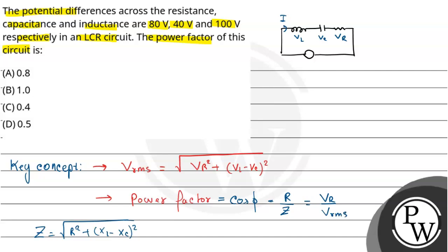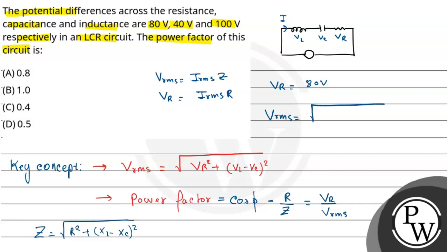Since Vrms equals Irms into Z, and Vr equals Irms into R, we get cos φ equals Vr by Vrms. Vr is given as 80V. Vrms equals root over Vr squared plus (VL minus VC) squared, that is root over 80 squared plus (100 minus 40) squared, which gives us 100V.